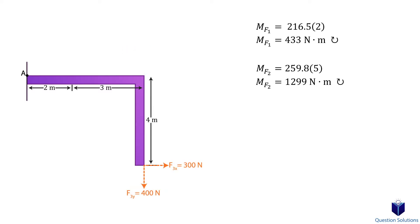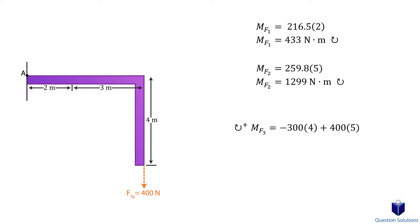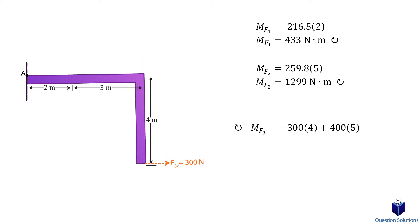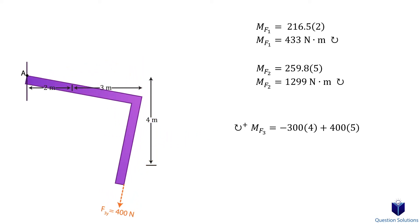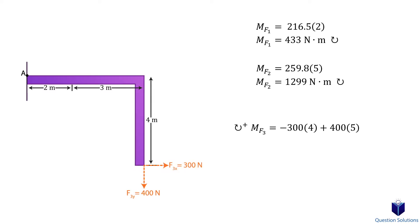Now let's look at force F3. Both components of force F3 will create a moment. If we look at just the X component, the perpendicular distance would be 4 meters. If we look at the Y component, the perpendicular distance is 5 meters. Now we need to be careful — the X component would cause the bar to turn counterclockwise, while the Y component would cause the bar to turn clockwise. So assuming clockwise to be positive, the moment created by the X component will be negative, while the moment created by the Y component will be positive. Since our answer is positive and we assumed clockwise to be positive, force F3 creates a clockwise moment about point A.